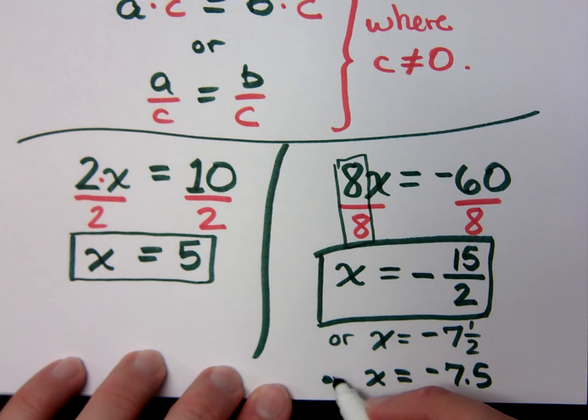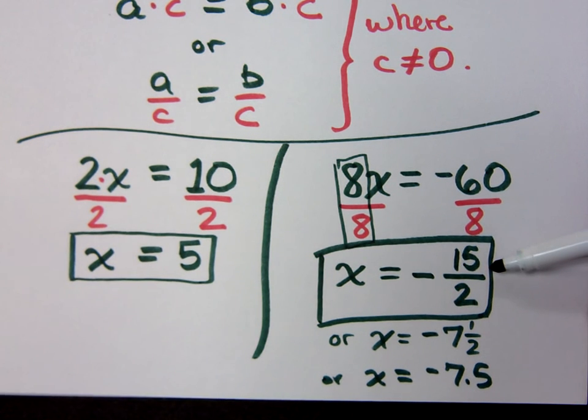What I want you guys to get in the habit of doing is leaving your answers as improper fractions. If you convert to a mixed number or decimal, you might make a mistake along the way, and it may not be exact. So your answers must be exact for me.